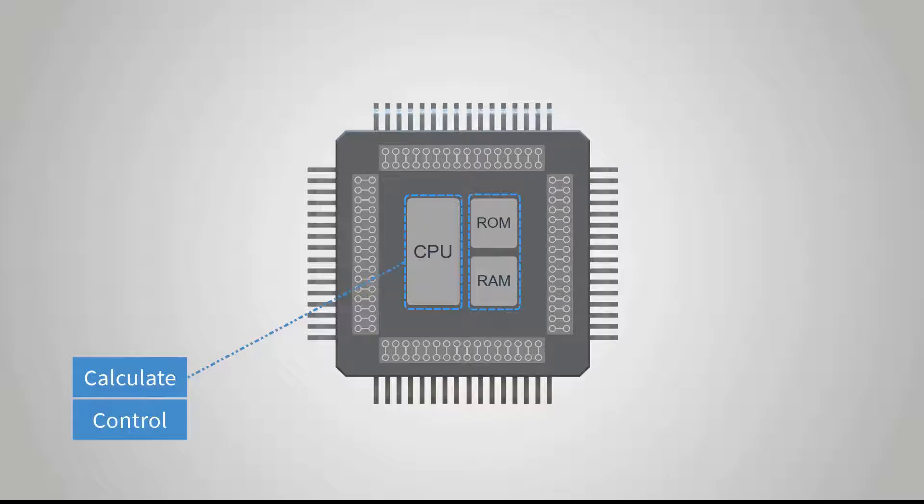Where is the program code stored? The program code is stored in the memory. The memory in the microcontroller is generally divided into two types: one is the read-only memory ROM, and the other is the random access memory RAM.